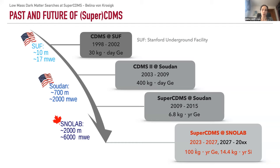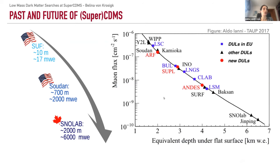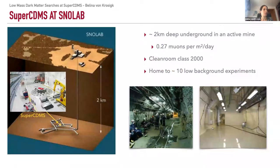Let me remind you why we go so deep. On the y-axis you see the muon flux. If dark matter can pass through our detectors and interact, so can muons and all their secondaries — and the muon flux on the surface is super high, so we would be buried in backgrounds. That's why SuperCDMS quickly went deep to Soudan, and now goes all the way down to SNOLAB, which is really the deepest clean room underground lab. Jinping is deeper, but not a clean room to the level required. This is roughly two kilometers of rock, and you can see the position of SuperCDMS in the ladder labs at SNOLAB.